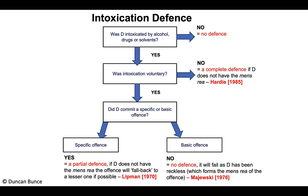The case of Kingston is where the defendant, who was a paedophile, was blackmailed by another person who had spiked his drink and set up an opportunity for him to abuse a young boy who was asleep or unconscious in the room. The defendant argued that if he hadn't been involuntarily intoxicated he wouldn't have done those things, but that didn't work because he clearly knew what he was doing — he had formed the mens rea for that offence.